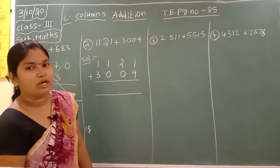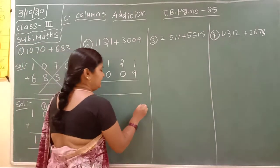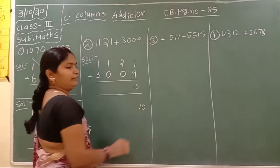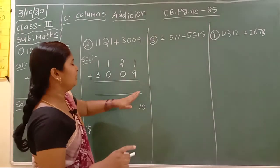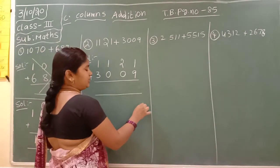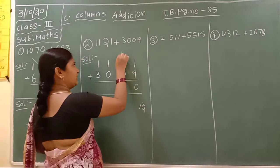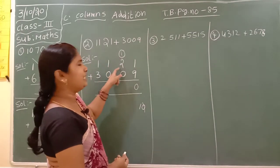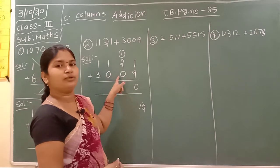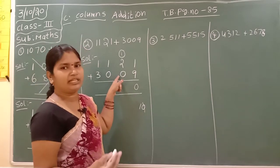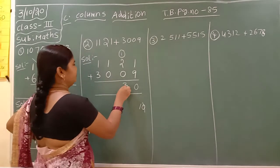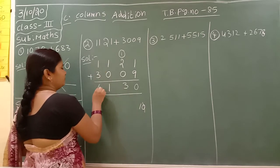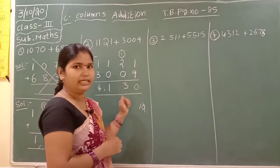One's place: one plus nine. How much? Ten. Ten means don't write two digits directly here — that is wrong. So you write down: zero in the one's place, and carry one to the next place as regrouping. Two plus one is three. Three plus zero: if we add zero to any number we get the number itself — three only. Next, one plus zero is one only. One plus three is four. The answer is four thousand one hundred and thirty.